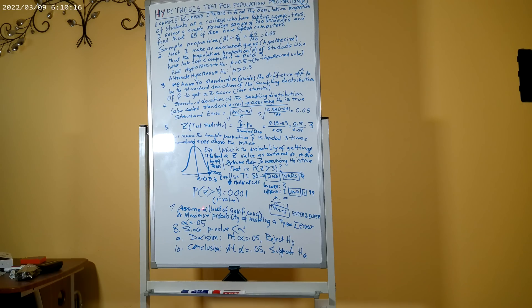Now we can assume alpha—this is the level of significance. What is level of significance? It's maximum probability of making a type 1 error. What is type 1 error? When we reject H₀ even though H₀ is in reality true. That is, we make a wrong decision of rejecting H₀ even though it is true. That is the maximum risk we are taking.